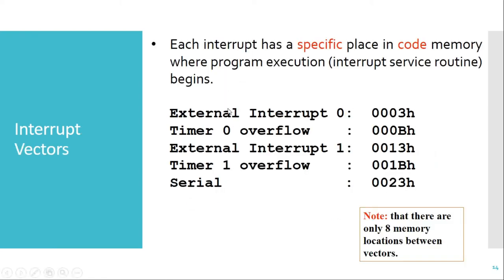Every interrupt has a vector address. The vector address is an address in program memory and it is unique for every interrupt. Whenever an interrupt occurs, the program counter jumps to the specific vector address and starts executing the instructions stored from that vector address location onwards.